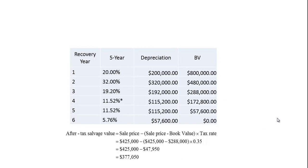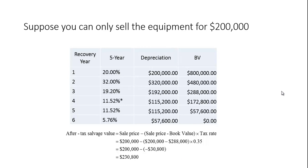Now suppose you can only sell the equipment for $200,000. The book value is $288,000, so you actually have a capital loss. In this case, you have tax savings: the $88,000 capital loss times 35% saves you $30,800 in taxes, so your after-tax cash flow is $230,800.